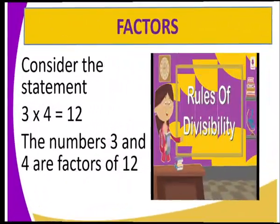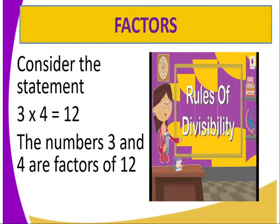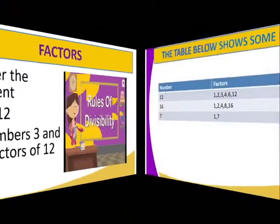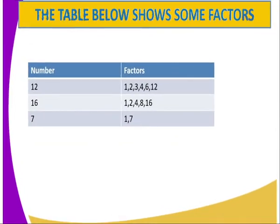Let us start with the first one, which is the factors. Now when we refer to factors, here we are going to consider the statement 3 times 4, whereby you are getting 12. So here the numbers 3 and 4 are being termed as the factors of 12.